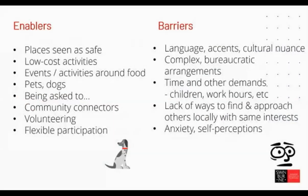Key enablers included places where safety was perceived, low-cost activities, events around food, pets and dog parks — there was an article this morning about dog parks as the new public square — being asked to go along, community connectors, volunteering, and flexibility. Key barriers included language and cultural nuance, complex bureaucratic arrangements, time pressures, lack of ways to find and approach others with the same interests, and anxiety.